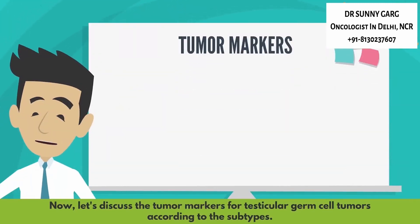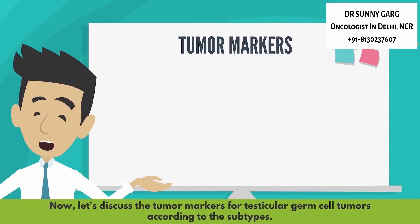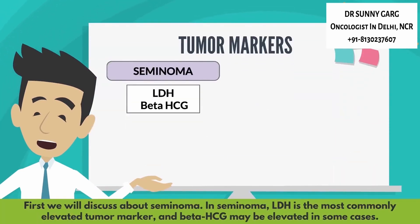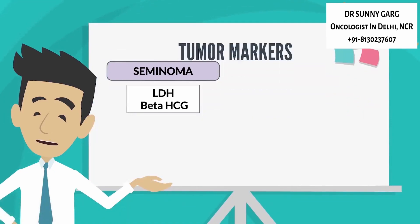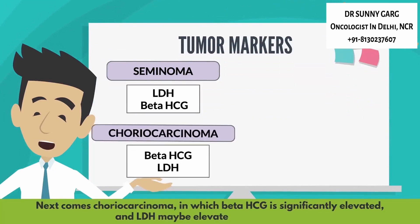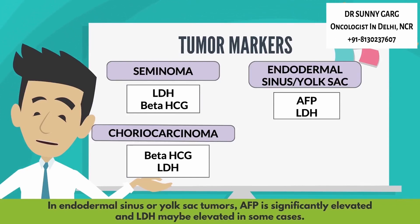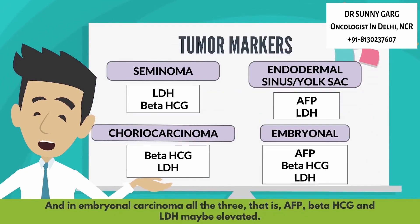Now let's discuss the tumor markers for testicular germ cell tumors according to the subtypes. In seminoma, LDH is the most commonly elevated tumor marker and beta-HCG may be elevated in some cases. In choriocarcinoma, beta-HCG is significantly elevated and LDH may be elevated in some cases. In endodermal sinus or yolk sac tumors, AFP is significantly elevated and LDH may be elevated in some cases. In embryonal carcinomas, all three — AFP, beta-HCG, and LDH — may be elevated.